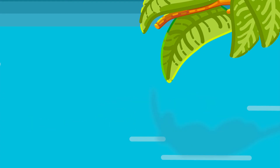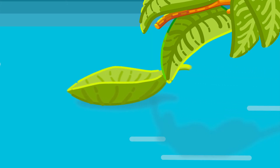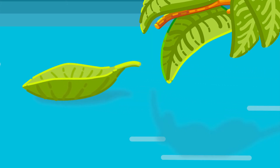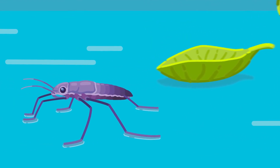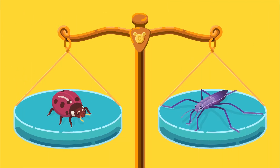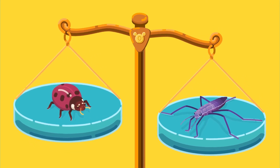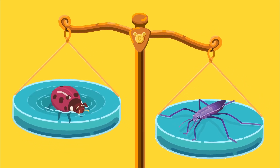If an object is light enough, the surface tension of water can support its weight. When the strider steps on water, the surface forms a small dimple around its feet. Yet, insects that are lighter than the strider will still break the surface tension if they try to walk on water.